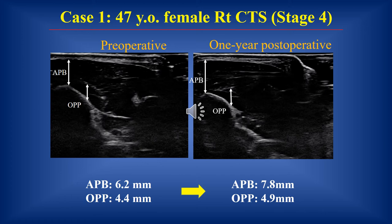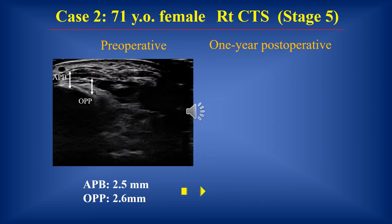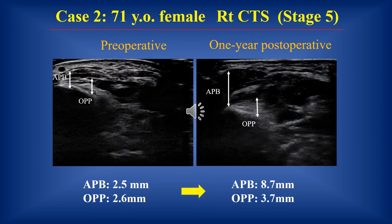A representative case is a 47-year-old female with CTS stage 1. The OPP depth was 4.4 mm preoperatively and 4.9 mm after one year post-operation. Another case is a 71-year-old female with CTS stage 5.